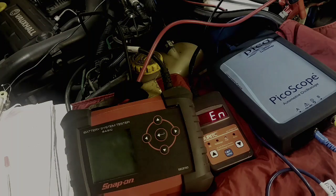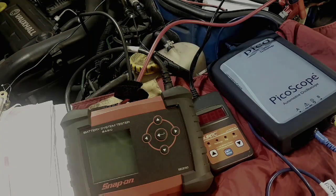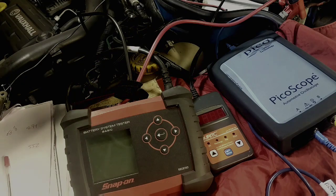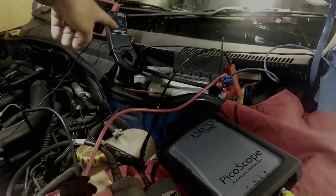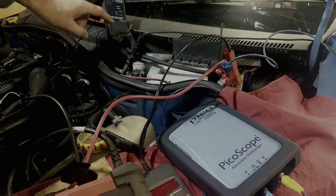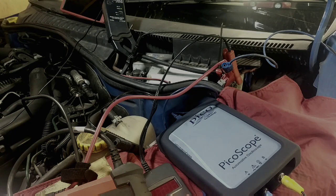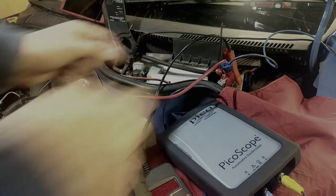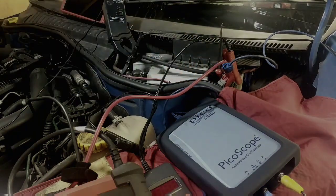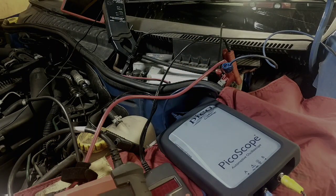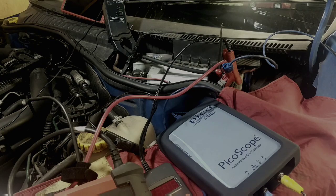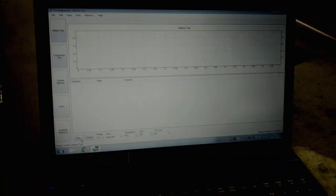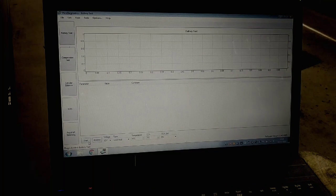Okay, and now moving on to the Pico. So the Pico is a little bit more involved. I've got a 2000 amp clamp going to the starter. I've also got channel A set up to measure voltage on the battery. So channel A is the voltage of the battery, channel B is the amp draw, and then transfer that through the Pico into the laptop.